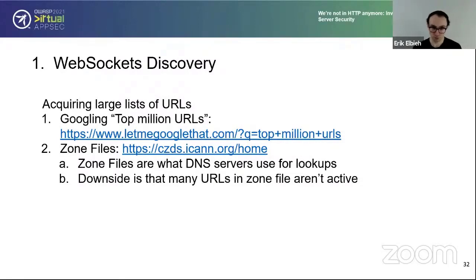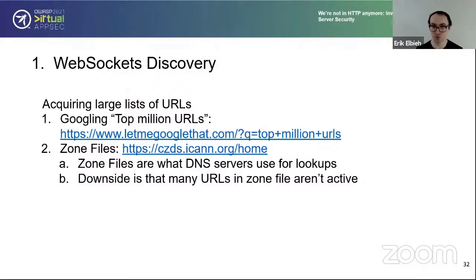We have a tool that can scan many websites for HTTP 101 status responses. Now we need targets to scan. The first option is a top million URLs list. A second option, perhaps more thorough, is to use zone files — what DNS servers use to map domain names to IP addresses, giving a comprehensive list of all .com or .org top-level domains. The downside is that many URLs in zone files are not actually active, and the .com top-level domain file is over 20 gigabytes.